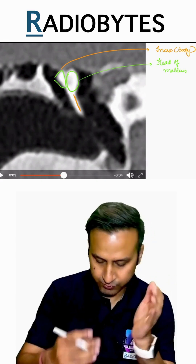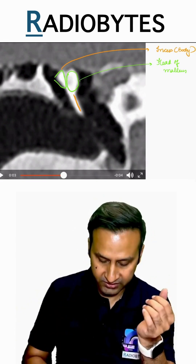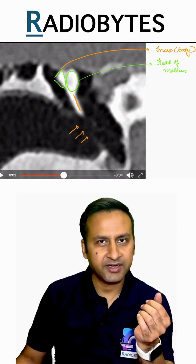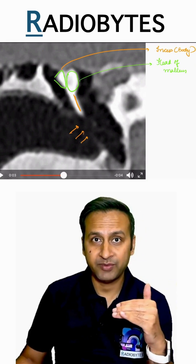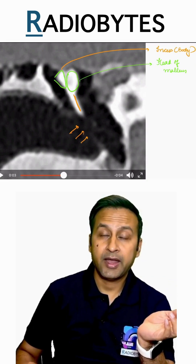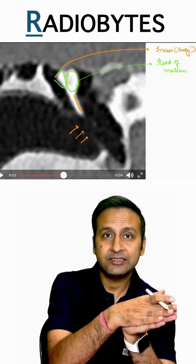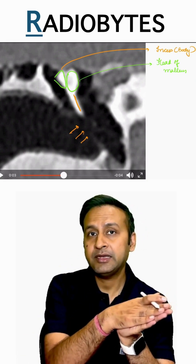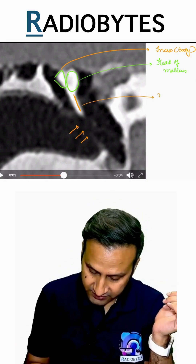Now let's look at the malleus. I can see that there is a large process of malleus extending downwards up to the level of the tympanic membrane. The most important part of malleus which forms the umbo and is responsible for touching the tympanic membrane is the manubrium.